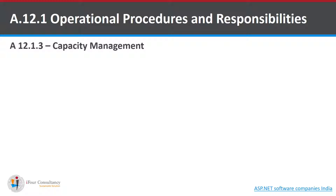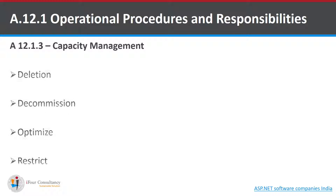The third control is Capacity Management. It states that the use of resources shall be monitored, tuned, and projections made of future capacity requirements to ensure the required system performance. Unused data must be deleted, unused programs must be decommissioned, resources used in a project must be optimized, and access to critical programs must be restricted to authorized users only.